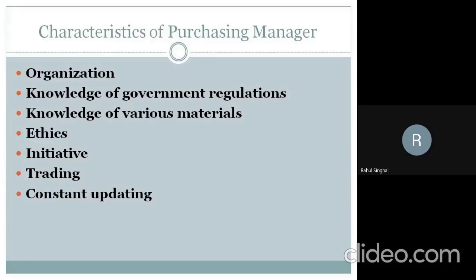A purchasing manager needs to be aware of what compositions of material the government has prescribed for manufacturing, and which products or chemicals are restricted. They must ensure restricted chemicals are not utilized in the manufacturing process. For instance, if you manufacture a 100% cotton product, the government may give you a subsidy — so a procurement manager should ensure they acquire enough cotton to qualify.